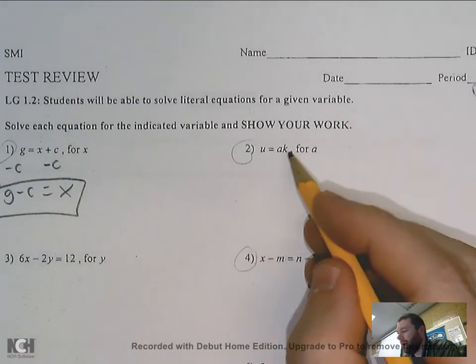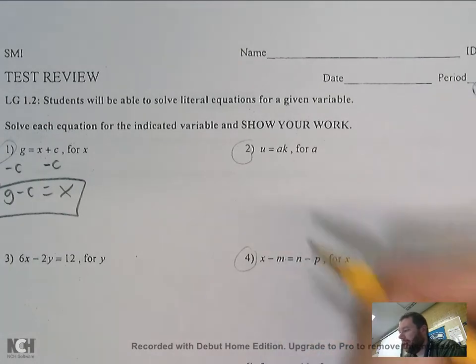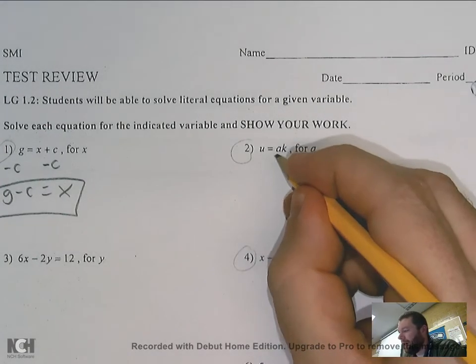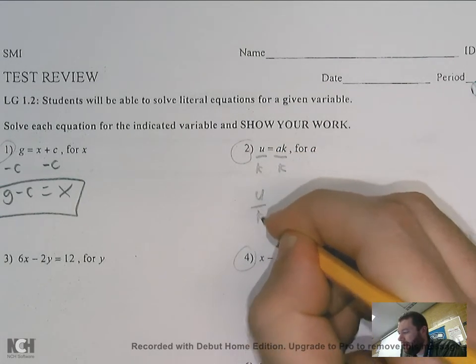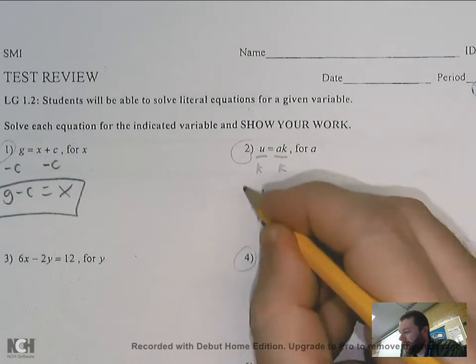This one wants me to solve for a. I have u = a times k, so I've got to get rid of that k. It's timesing, so I would divide each side by k, which gives me u over k is equal to a. A is by itself. I'm done.